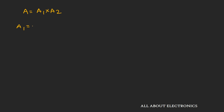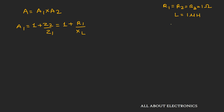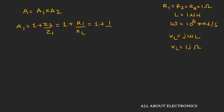A1 is equal to 1 plus Z2 divided by Z1, or we can write it as 1 plus R1 divided by XL. Here R1, R2, and R3 are equal to 1 ohm, while the value of the inductor is 1 microhenry, and the operating frequency is equal to 10 to the power 6 radians per second. XL will be equal to j times ωL. If we put the value of ωL, the value of XL comes out as j1 ohm. So the value of A1 will be equal to 1 plus 1 divided by j, or A1 is equal to 1 minus j.